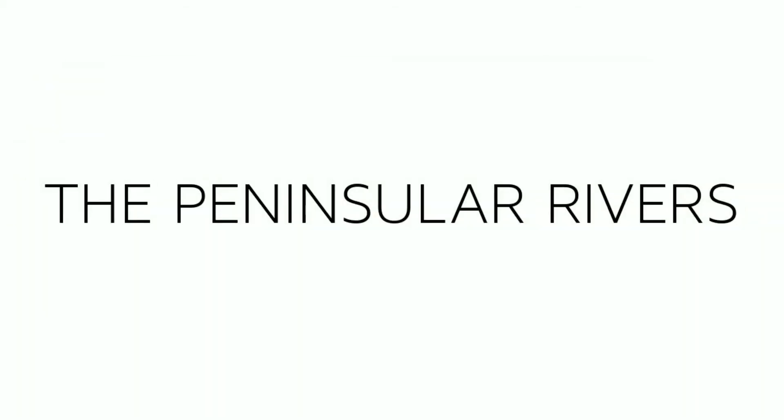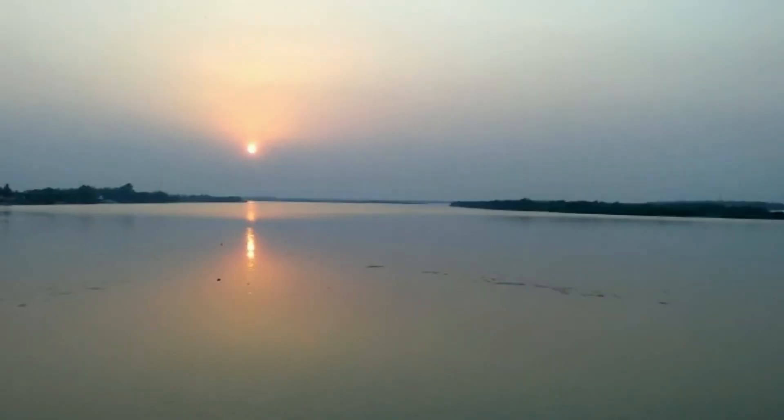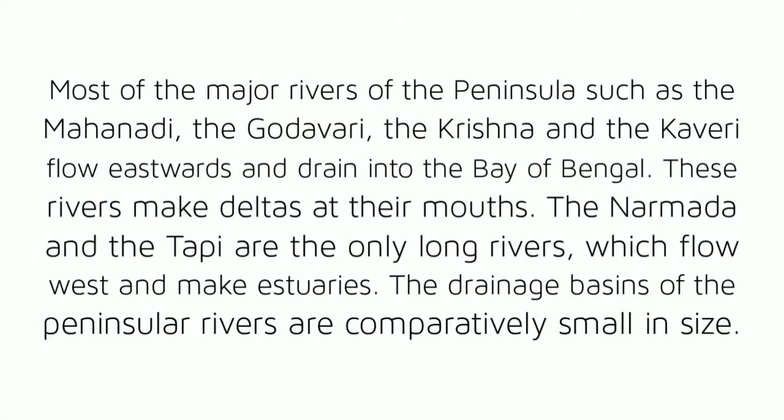Most of the major rivers of the peninsula — such as the Mahanadi, the Godavari, the Krishna and the Kaveri — flow eastwards and drain into the Bay of Bengal. These rivers make deltas at their mouths. The Narmada and the Tapi are the only long rivers which flow west and make estuaries. The drainage basins of the peninsular rivers are comparatively small in size.